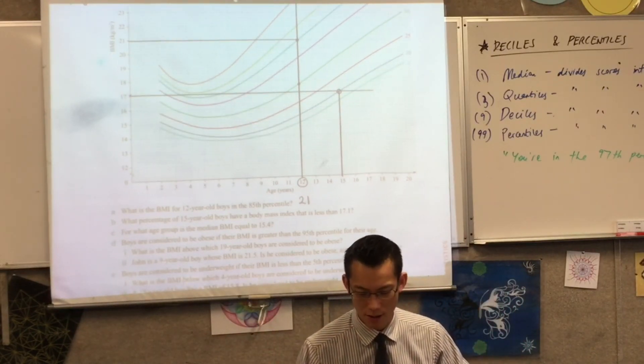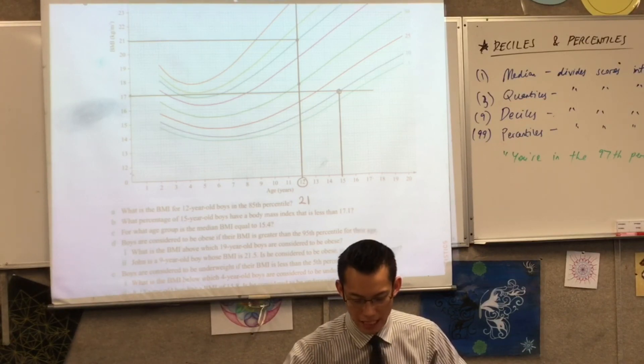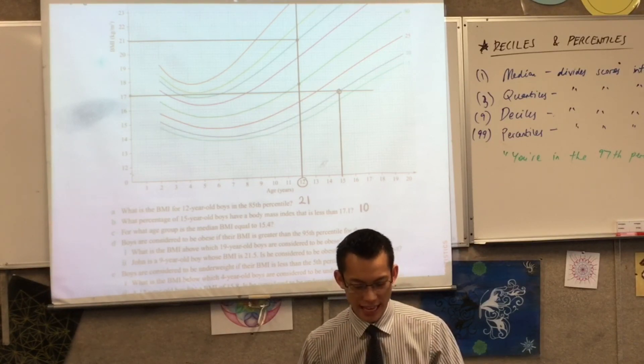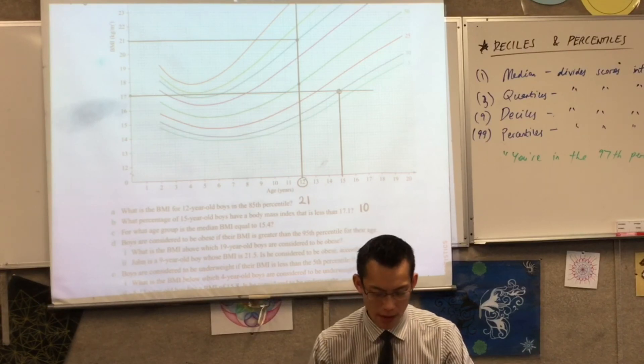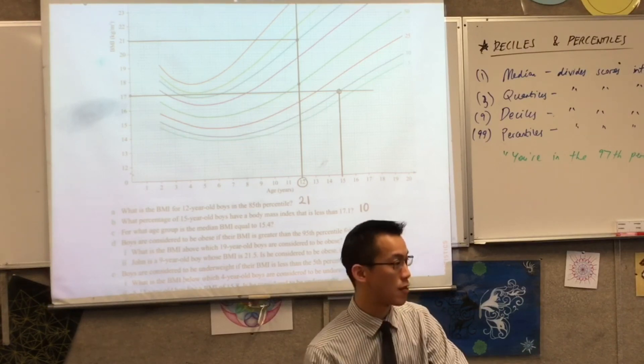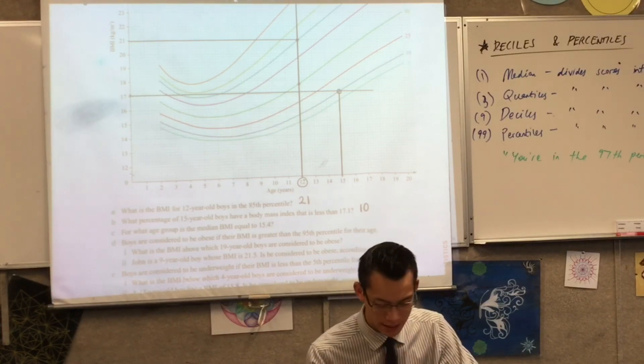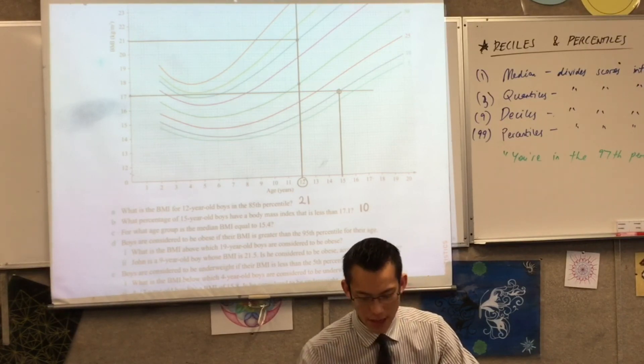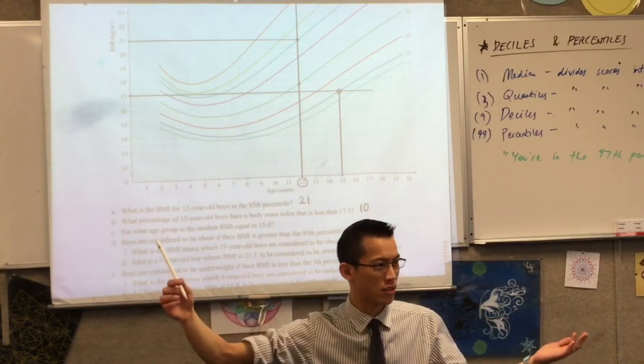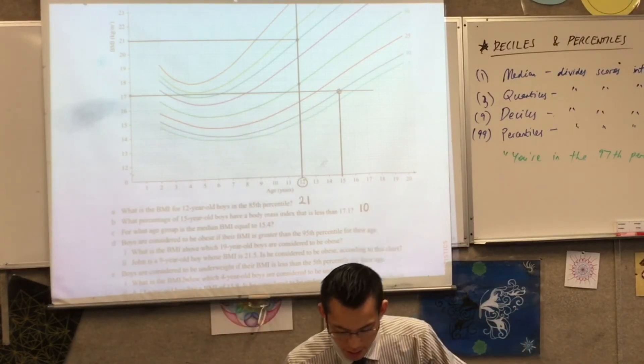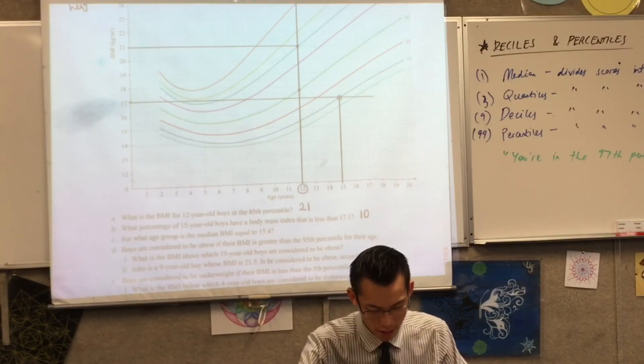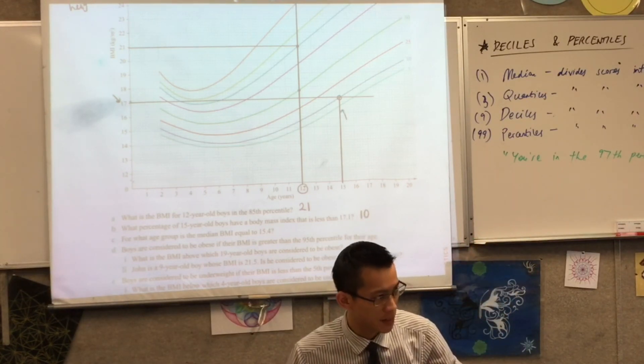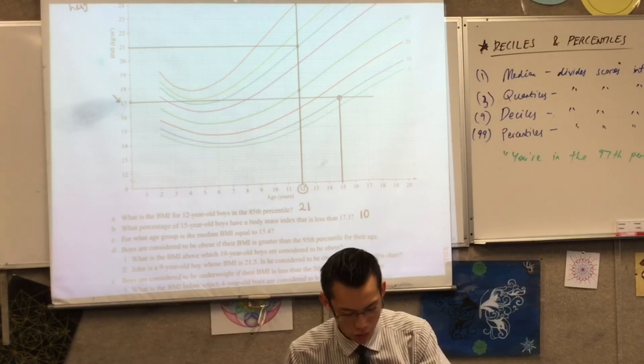Okay, so what's my answer? What have I got here? What percentile am I on? I'm on the 10th percentile. So what percentage of 15-year-olds have a body mass index that's less than 17.1? 10. Now, just before I leave this question, what if I had asked it in the other direction? If I'd said, what percentage of 15-year-old boys have a body mass index that is greater than 17.1? What would be your answer? Everything above 10. Which is 90% of the population. Does that make sense? So, I've read across from 17.1 over here, and I've gone all the way across to 15-year-old, which is here.